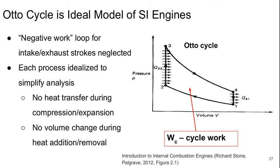The Otto cycle is our ideal model for these spark ignition engines. Here we ignore the negative work loop for the intake and exhaust strokes, assuming that those just cancel each other out. Each process is simplified and idealized — we assume there's no heat transfer during the compression or expansion processes, and there's no volume change during heat addition and heat removal. This is essentially assuming that all the combustion happens instantaneously at the minimum volume.